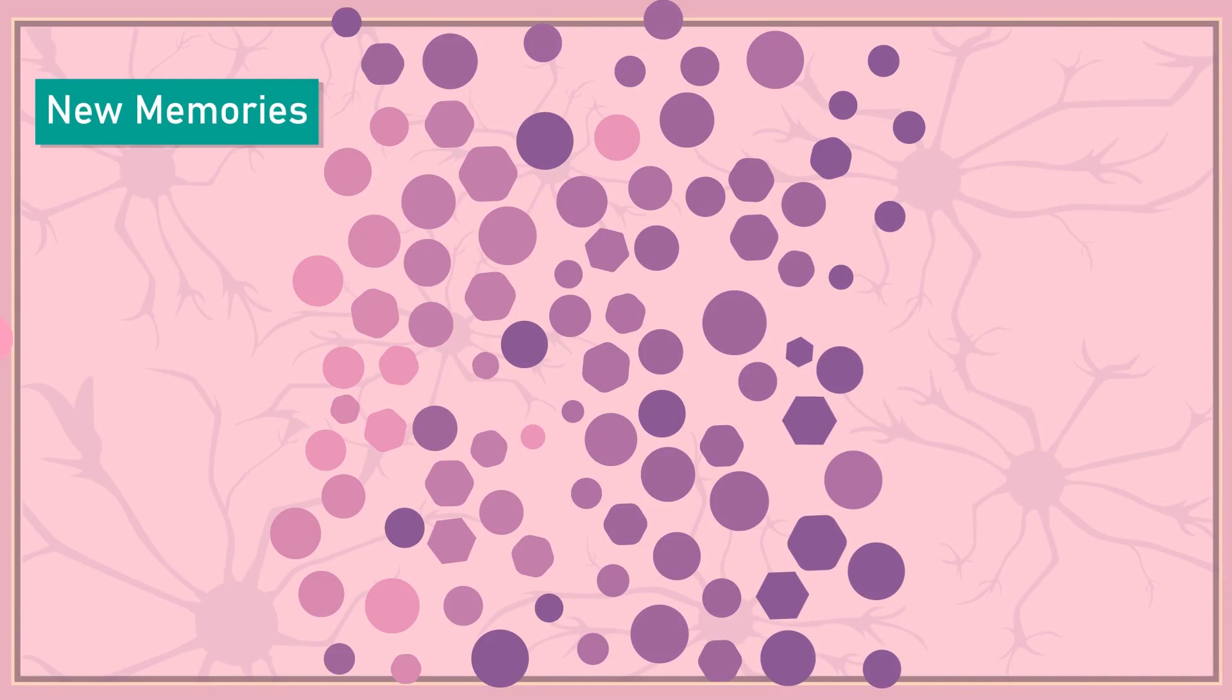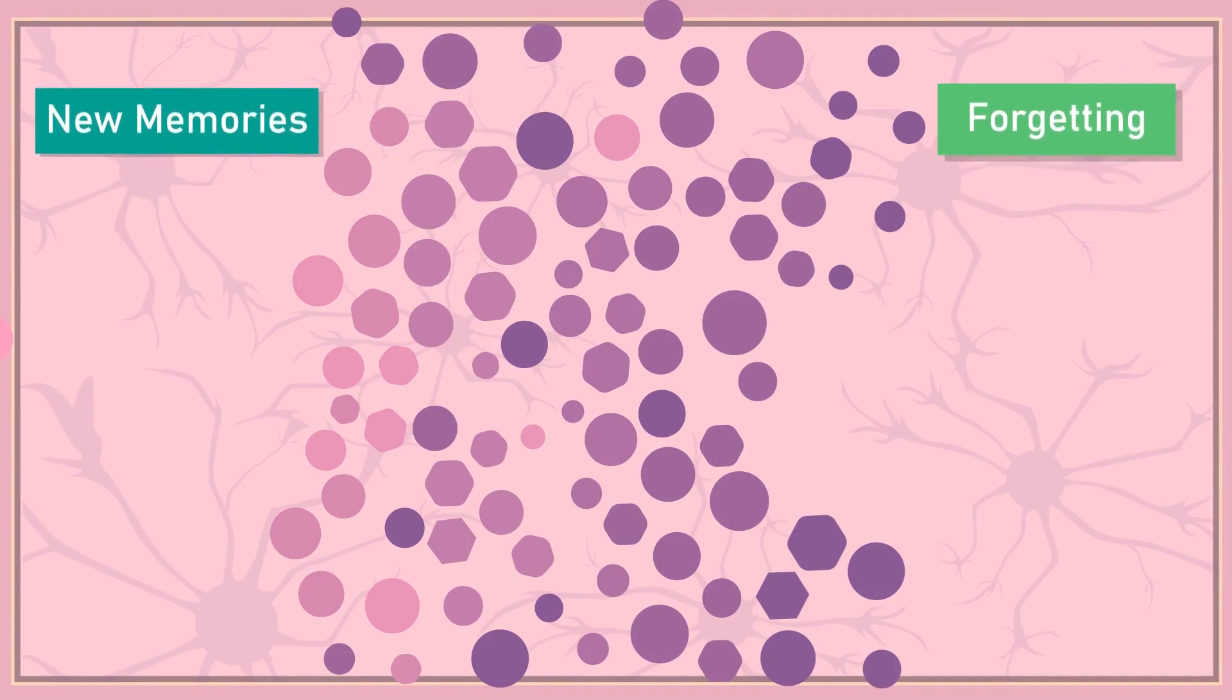Why do we forget? It is because a memory trace is created every time a new memory is formed. And as the decay theory suggests, that over time, these memory traces begin to fade away and disappear. In other words, if the information is not retrieved and rehearsed, it will eventually be lost.